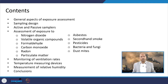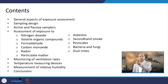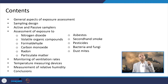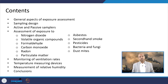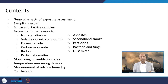We will discuss how to assess the concentrations of these particular pollutants in the indoor environment. Monitoring of ventilation rates is important because whatever sources are there within the indoor environment, or something coming from outdoor because of door opening or windows, ventilation plays a very critical role in deciding how much air quality is deteriorated or improved. We will also discuss temperature measuring devices and measurement of relative humidity, as these also play a role in determining indoor air quality.